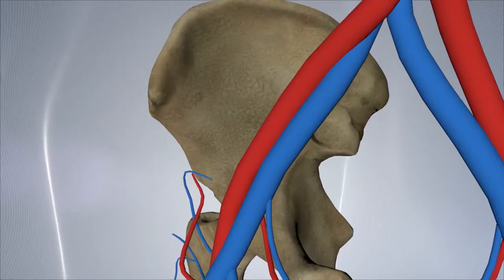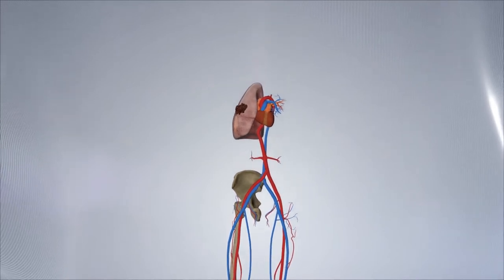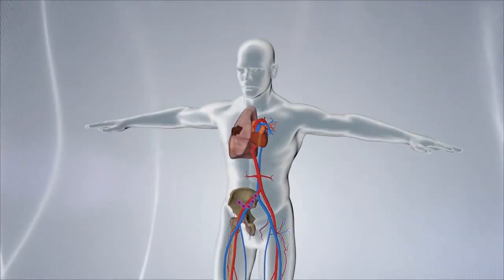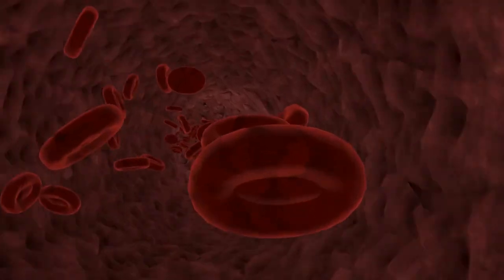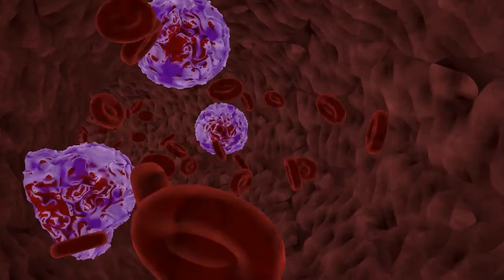As a consequence, larger numbers of functionally altered myeloid cells are released into the systemic circulation. The well-known increased neutrophil to lymphocyte ratio in the peripheral blood of cancer patients is a reflection of this process.